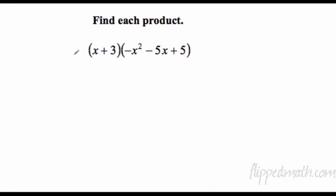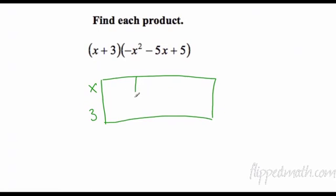Find each product. Remember you could do a double distribute or you could set up the table. I'll set up the table: x plus 3, and then across the top we have negative x² minus 5x and plus 5.